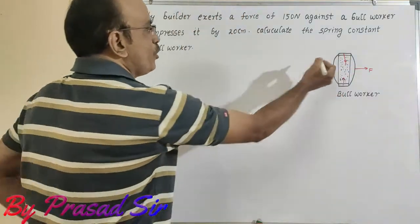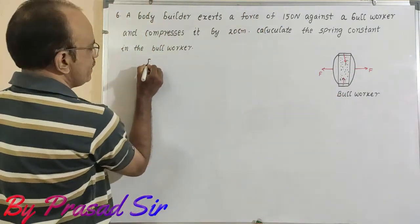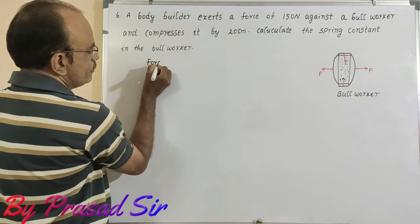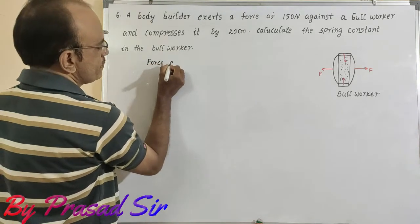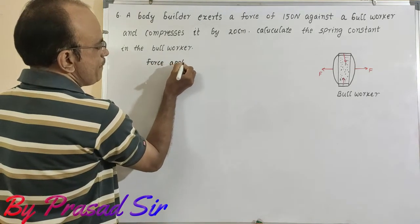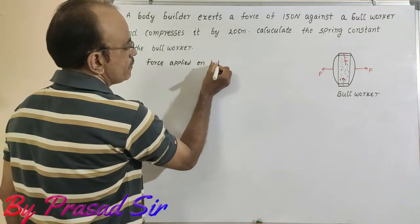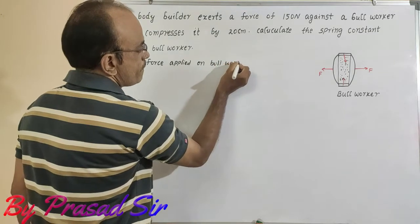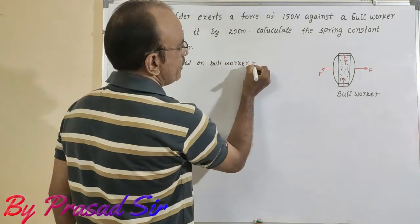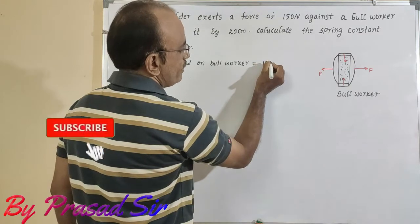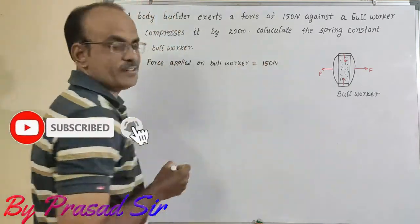First of all, what is the force which is applied? Here, force applied on bulwarker is equal to 150 newtons.